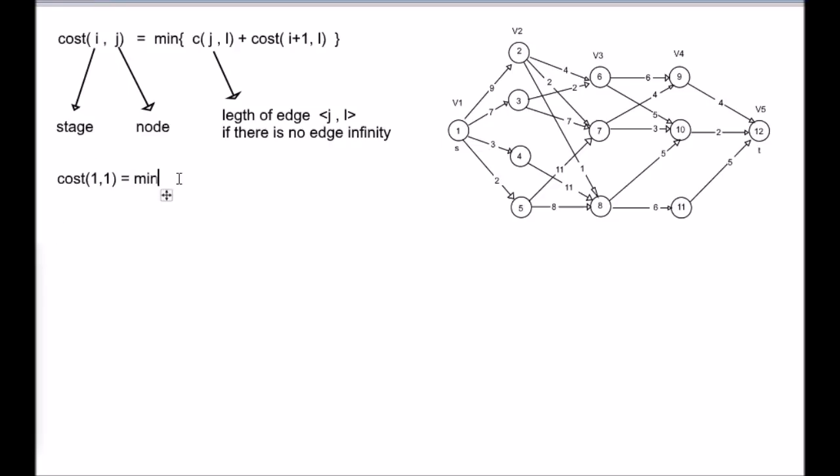Which is equal to minimum of C(1,2), this is the edge from 1 to 2, plus cost(2,2). This is the path cost from 2 to 12.